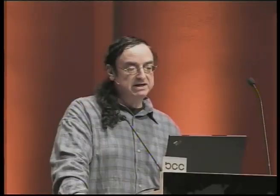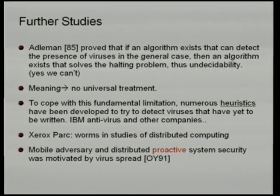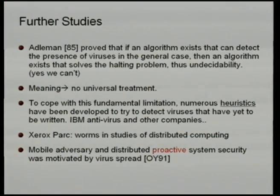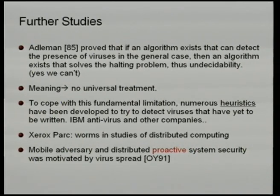Also in the 80s, it was shown that the problem of whether a program or a set of programs has a virus or doesn't have a virus is undecidable. This means there is no universal treatment. At the same time, antivirus heuristics based on scanning and signatures started to be developed.